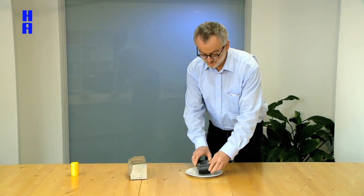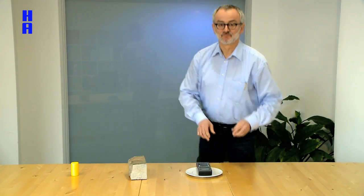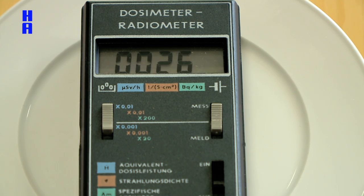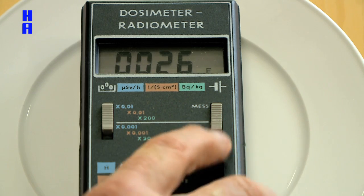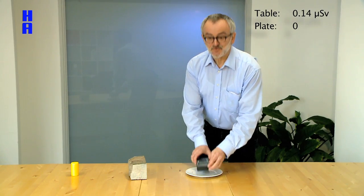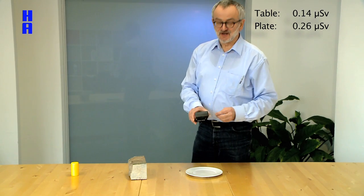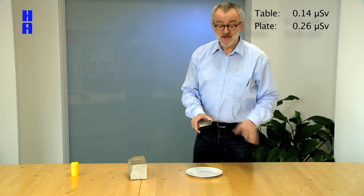Now let's continue using an ordinary plate. The value here is 0.26. Surprisingly enough, it's almost twice as high as for the table.